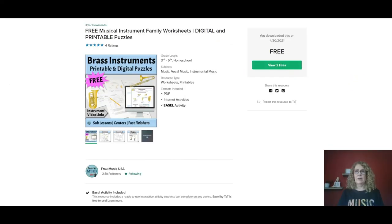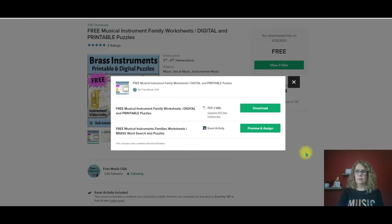Now let's take a look at a different kind of activity. This free set of simple brass worksheets works the same way but students will be using some of the easel digital tools to complete the assignment. So you'll click the green bar that says view two files. The top file is the printable worksheet. The second is the easel file. So once again click preview and assign. It opens automatically into easel.